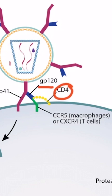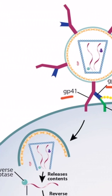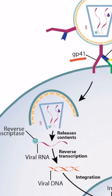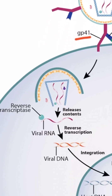GP120 interacts with the coreceptor CCR5 if it's infecting a macrophage, but it may also interact with CXCR4 if it's infecting a T-cell. GP41 acts as an anchoring protein that is inserted into the host cell membrane, which allows the virus to fuse with and gain entry into the cell.